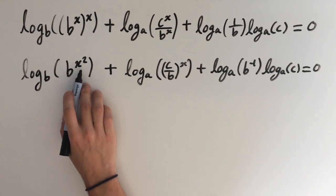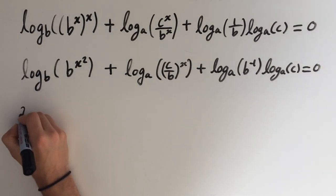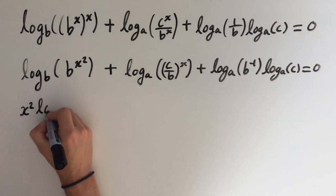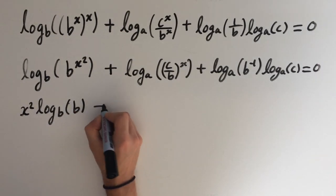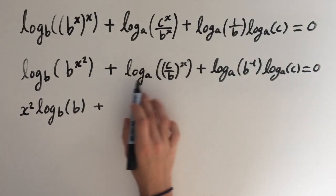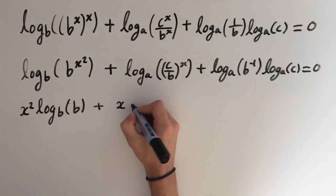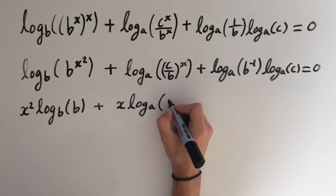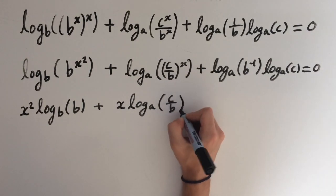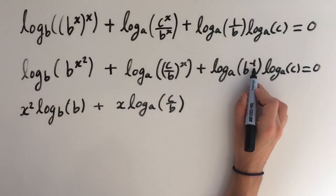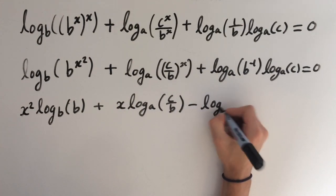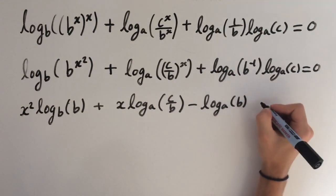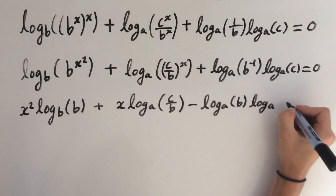So now we can use our power rule. We can bring down the x squared to the front. We'll have x squared times log base b of b, plus, bring down the x again using the power rule, plus x times log base a of c over b. And same thing again, use the power rule to bring down the minus 1. So we'll have minus log base a of b times log base a of c.